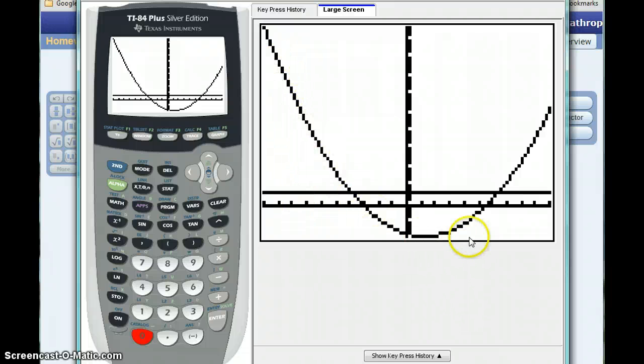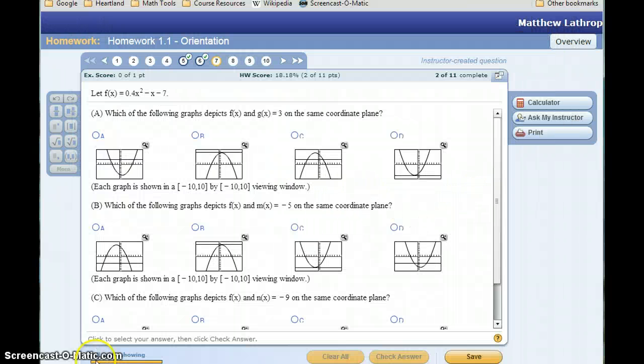We've got that parabola that we were given, that quadratic function, and then just a straight line y equals 3, which we can match up with the corresponding graph, which looks like probably A in this case.